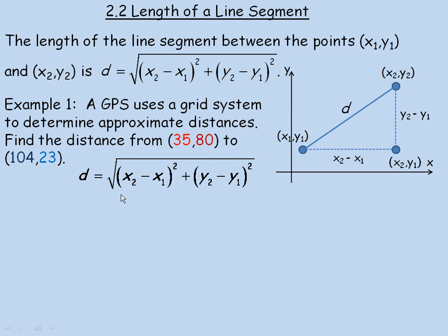So copying down the distance formula, same one we have up here, always copy your formula down first. And then 35 and 80 are the x1, y1, and 104, 23 are the x2, y2, or vice versa. It really doesn't matter. So in the formula, if I call this my second point and this my first point, 35 minus 104 is going to be squared here. And if you want to write 104 minus 35, there's nothing wrong with that. Just make sure these are written in the same order.